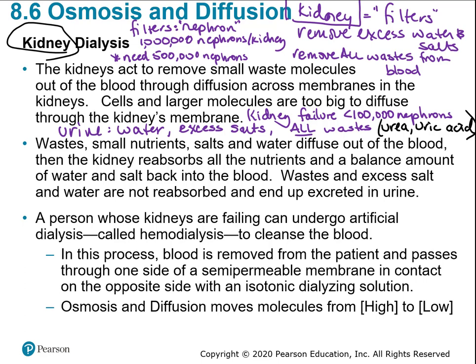The goal is to have no waste molecules in the blood. But as soon as blood passes through tissues, waste molecules diffuse in — and once it gets to the kidneys, they filter it out. A person with kidney function below 100,000 nephrons, where they're in kidney failure, can undergo artificial dialysis — specifically hemodialysis or peritoneal dialysis.